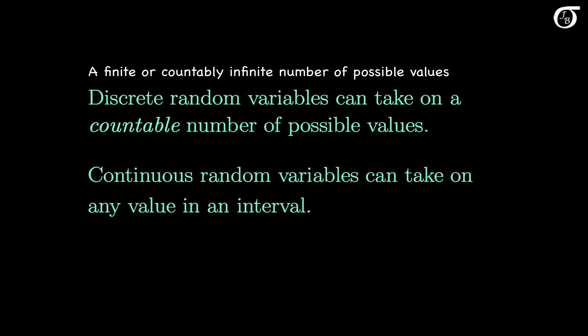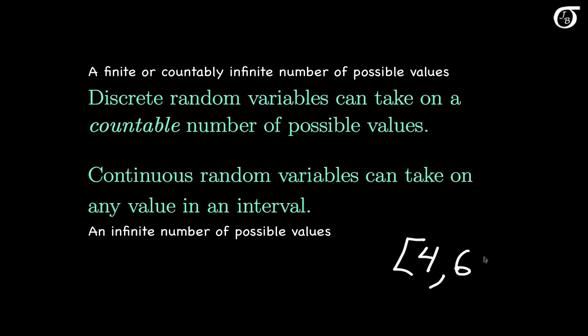Continuous random variables can take on any value in an interval of values. Continuous random variables always have an infinite number of possible values corresponding to every value in an interval. For example, a continuous random variable might take on any value between 4 and 6. There is an infinity of values between 4 and 6, including 4.267 and 5.894265 with infinite decimal places — there is a continuum of values between 4 and 6.